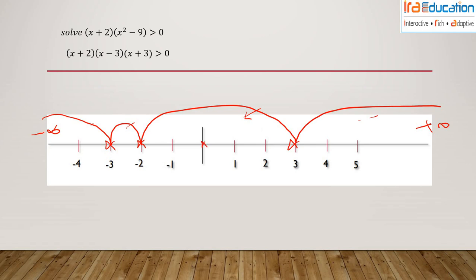I'll select the value 0 and substitute it into this inequality. If I substitute x = 0, what I get is (0 + 2)(0 - 9) which equals -18.